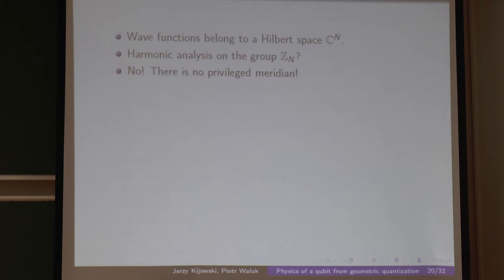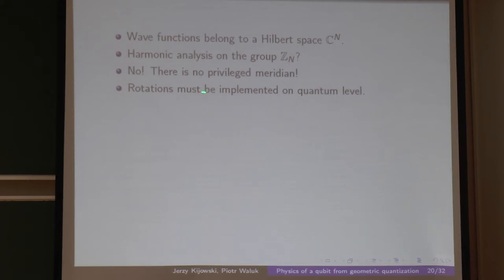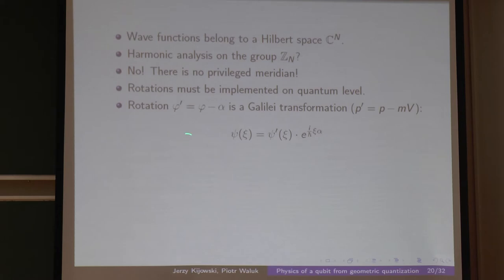This has nothing to do with physics. We have to release conditions which were too heavy. If not a privileged meridian, then rotations must be implemented at the quantum level. A rotation is just a shift in phi; if phi is momentum, then this is precisely the Galilei transformation — which means the wave function should undergo this change. But this function, when alpha is not 2pi, is no longer periodic.